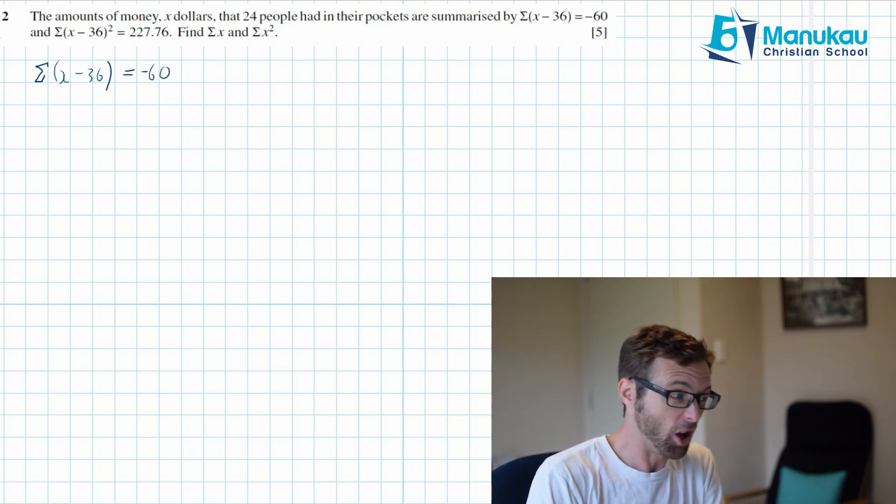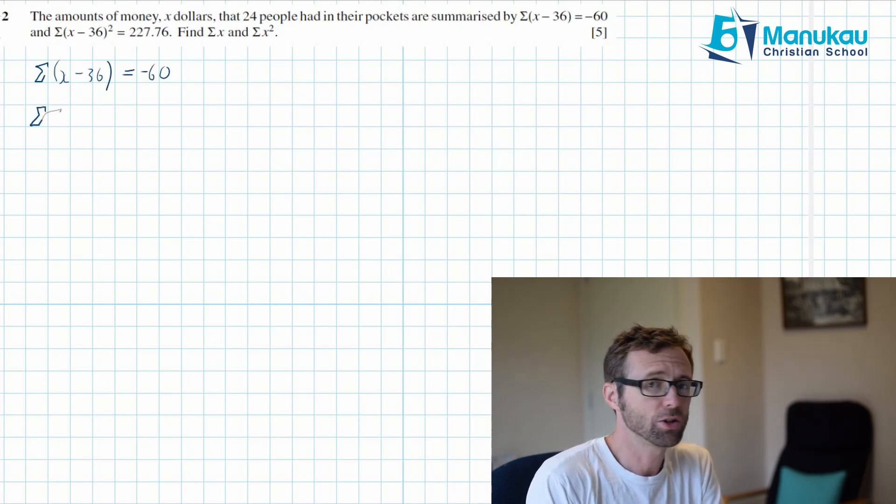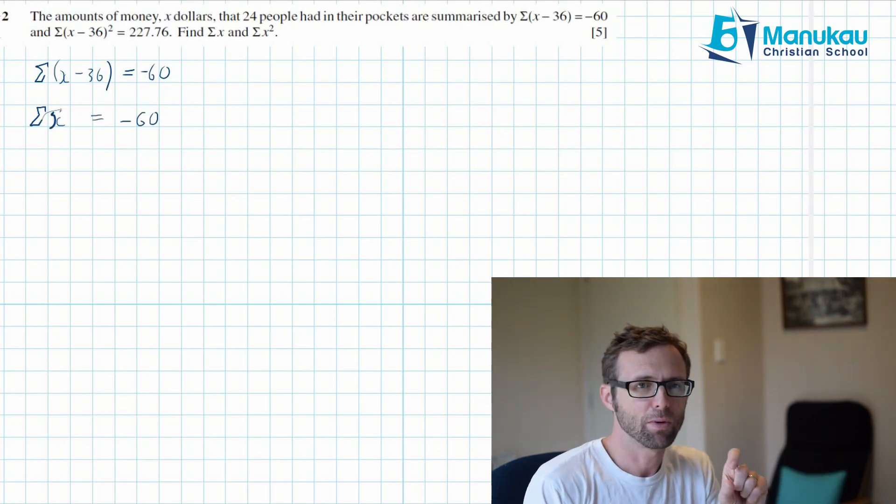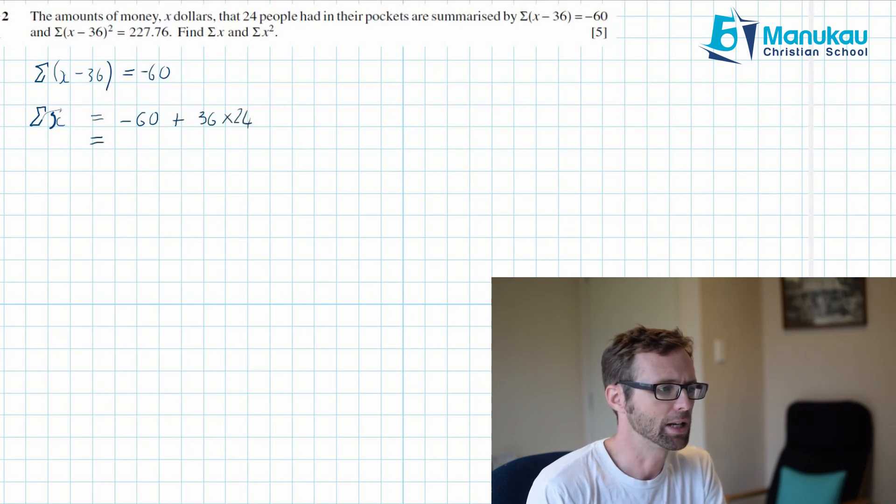So logically if you think about it, if you want to find sum of X you're going to have to take into account all of those minus 36's that you have added. So the sum of X is going to be this minus 60 that you have, and then you are going to have to add on to that all of the 36's that you took away. Now remember for each item of data you took away 36 so you're going to have to add on 36, 24 times. And if you do that you're going to get 804 which is the answer.